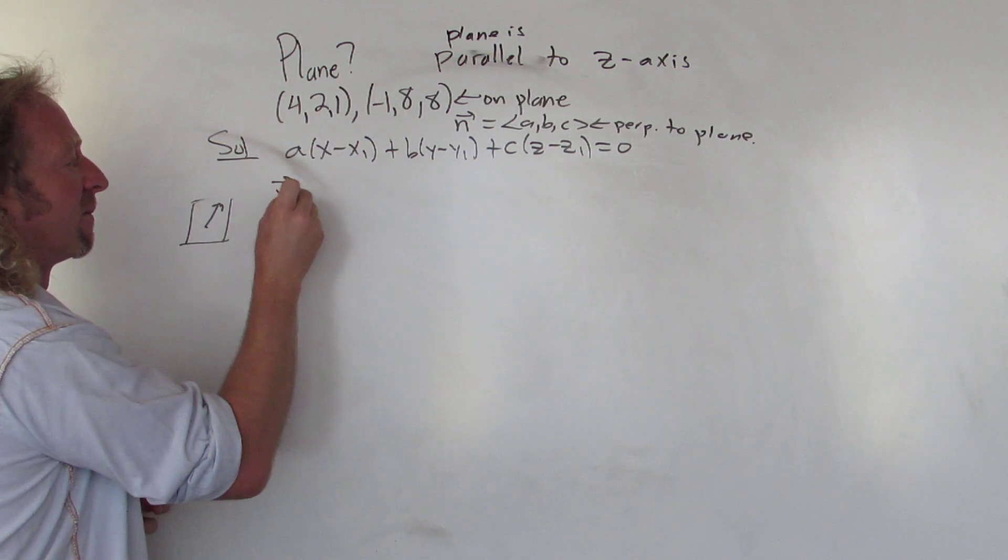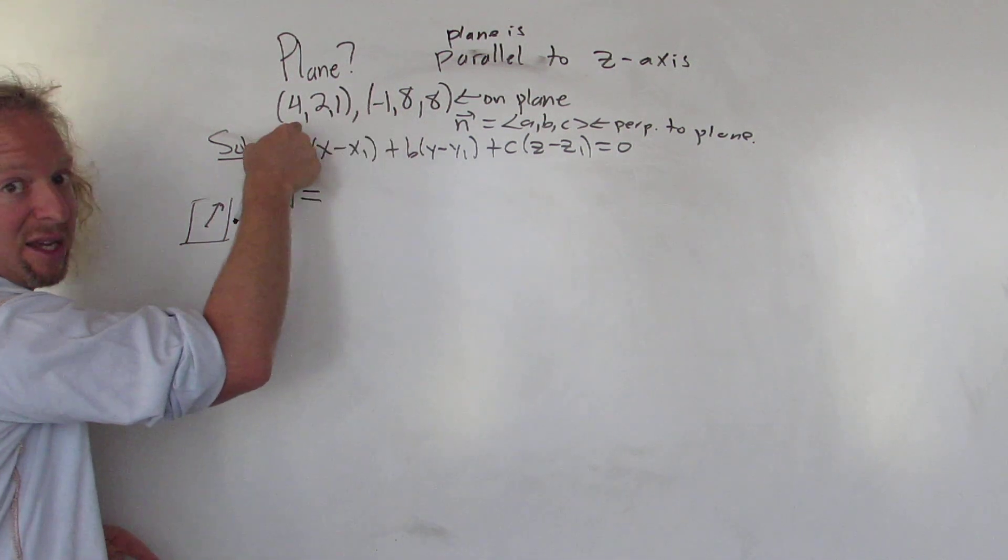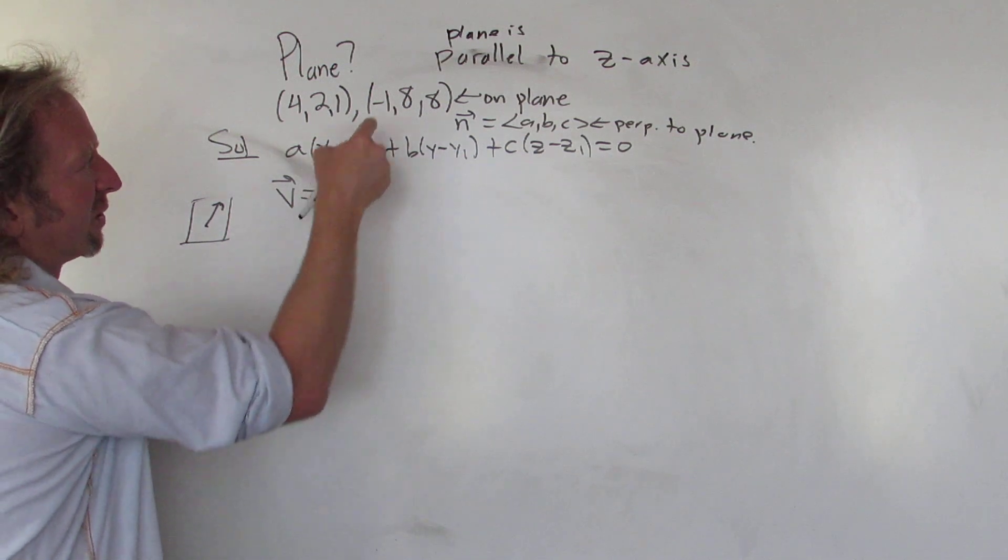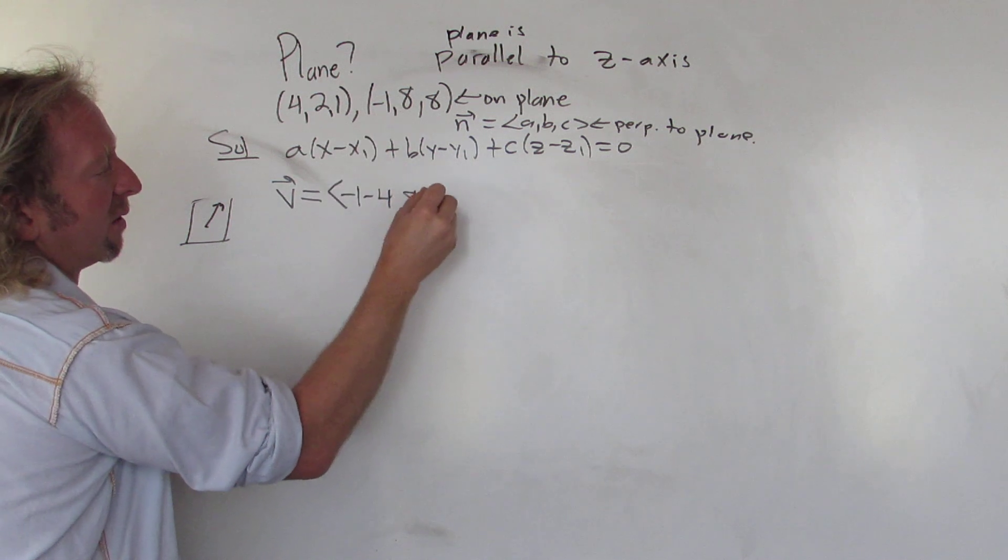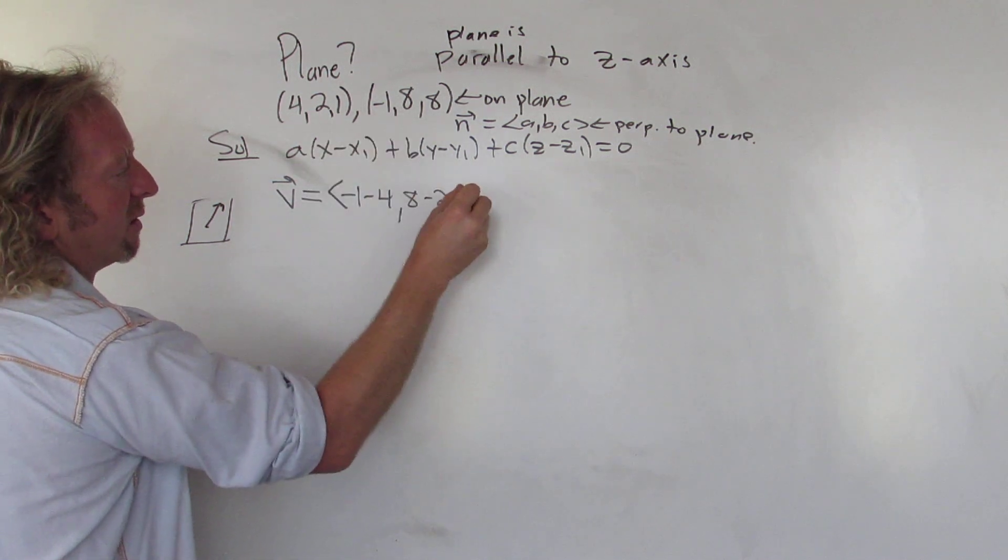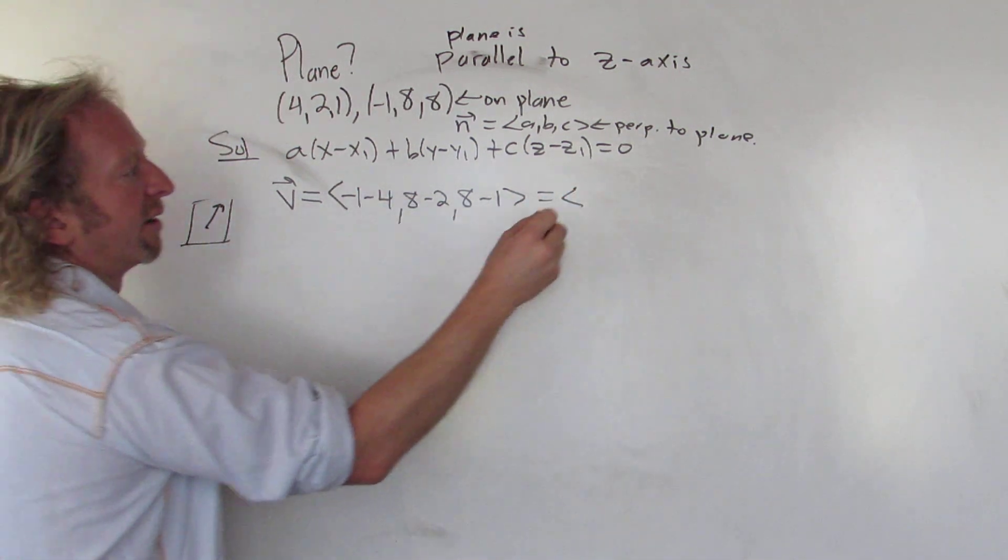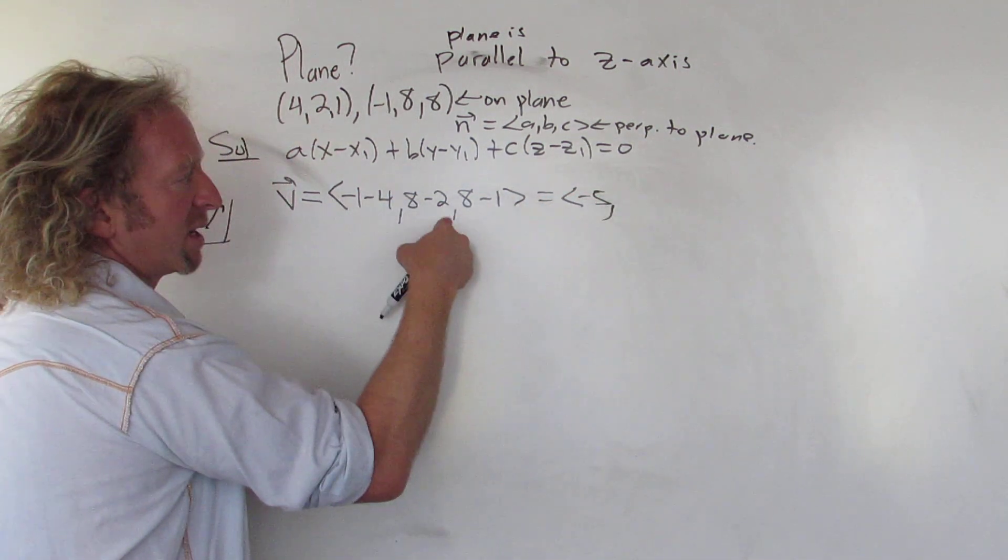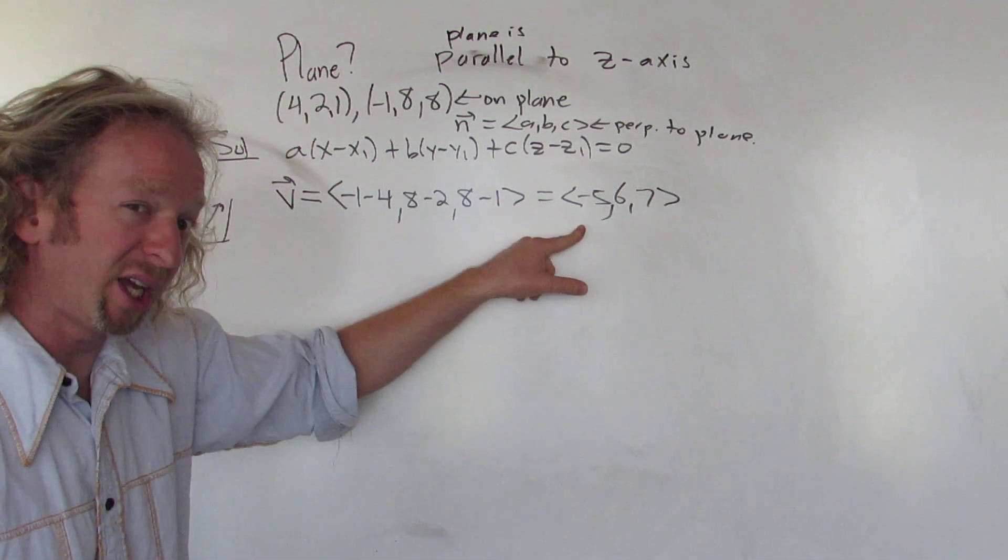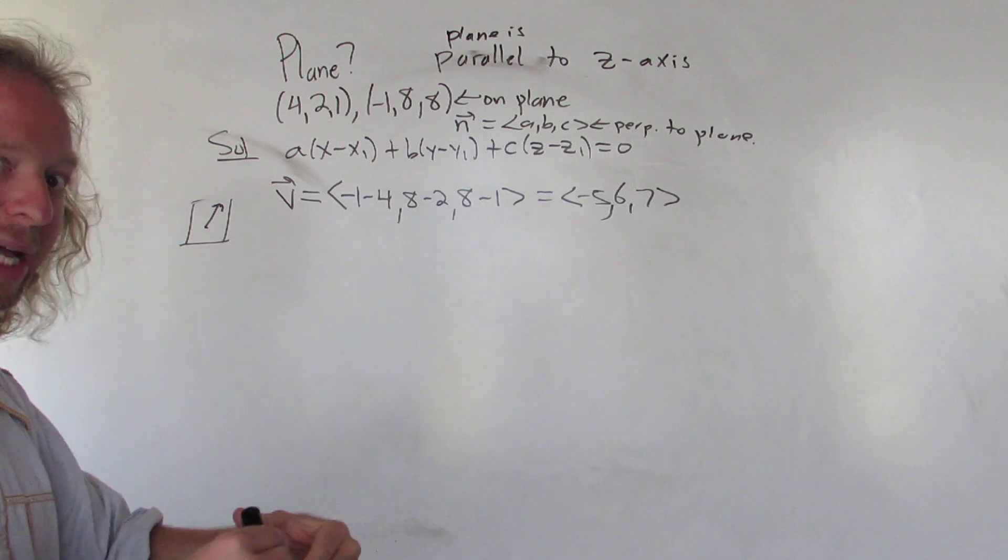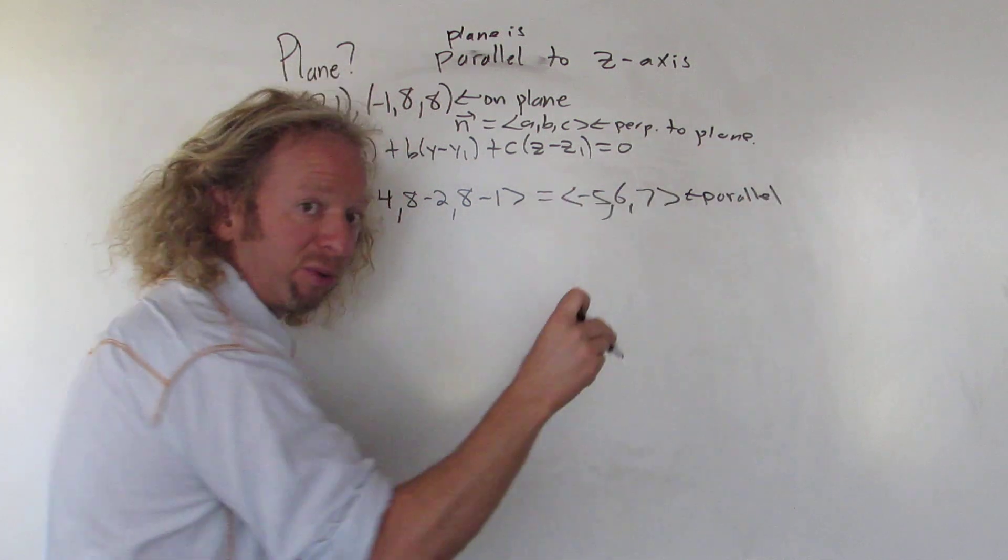I'll call it v. So given two points how do you find a vector? You just subtract the components. Let's do this minus this. So negative 1 minus 4, 8 minus 2, 8 minus 1. Okay, so this is going to be negative 5, 6, 7. So this vector is on our plane. In particular it's parallel to our plane.